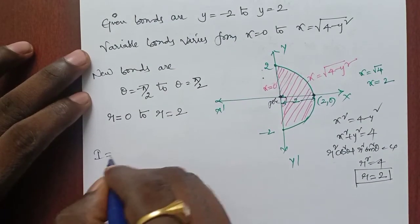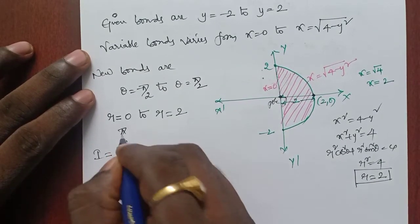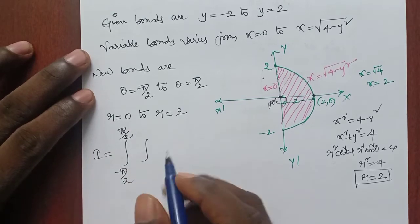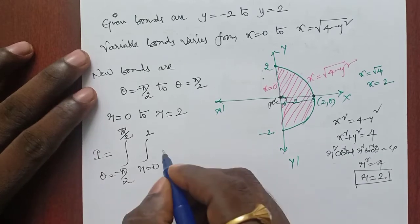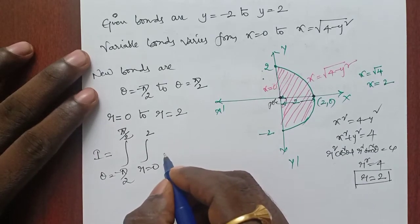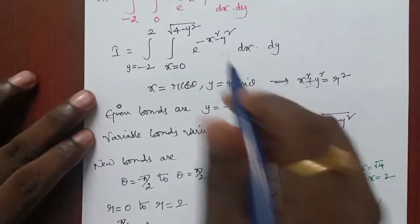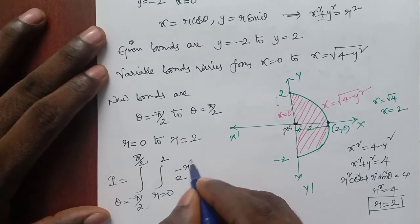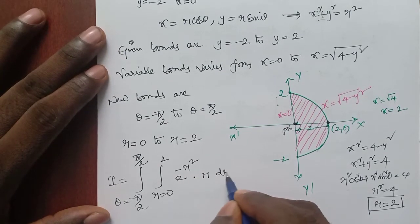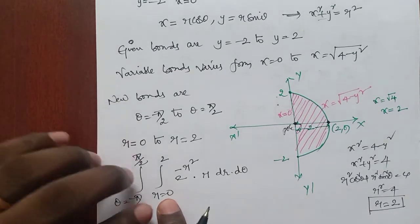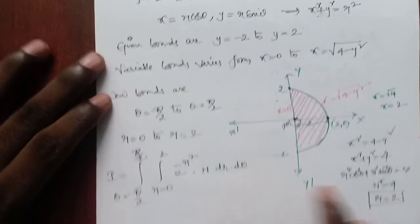Now, coming to the integration. The outer integral has bounds minus pi by 2 to pi by 2, and the inner integral has r from 0 to 2. The integrand e to the power of minus x square minus y square becomes e to the power of minus r square. The Jacobian gives r dr, so the integral is: integration from minus pi by 2 to pi by 2, integration from 0 to 2, of e to the power minus r square times r dr d theta. We integrate with respect to r first and then d theta.